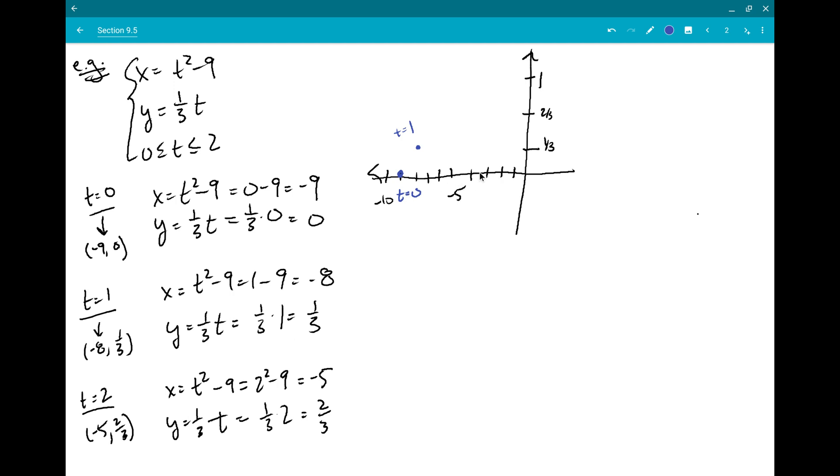And at 2, I was at minus 5, 2, 3, 4, 5. And up to 2 thirds. So right there. So those are the three different points I just calculated from the parametric equations.